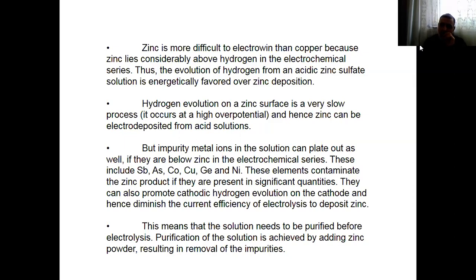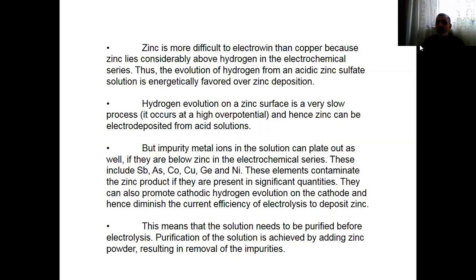But impurity metal ions in solution can plate out as well, because zinc is an active metal. If some other metal more noble than zinc is present, these metals go to the cathode. So we need to eliminate these metals if they are below zinc in the electrochemical series. These include antimony, arsenic, copper, germanium, nickel, etc. These elements contaminate the zinc product if they are present in significant quantities. They can also promote cathodic hydrogen evolution and diminish the current efficiency of the electrodeposit.